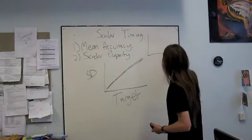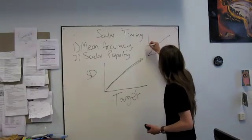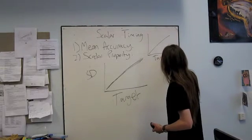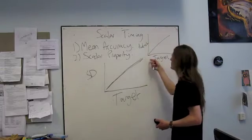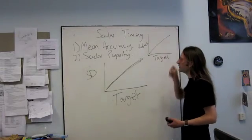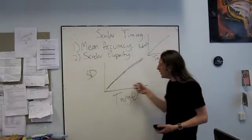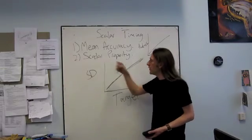So the graph I showed you before was their production versus target time. As the target time increased, their production increased. Then here we have their target time plotted to get how variable their productions were.